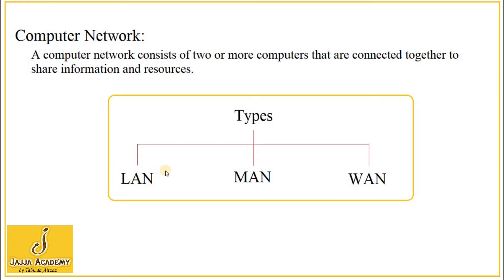For example, Local Area Network — LAN — covers the smallest area. Then comes MAN; MAN covers an area larger than a LAN network.